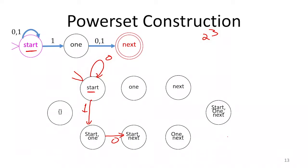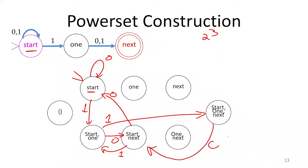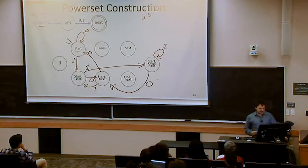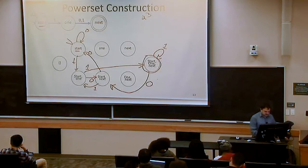From {start, 1} on a one, start goes to start and one, and one goes to next, so we're in {start, 1, next}. From {start, next} on a zero, start goes to start and next doesn't go anywhere, so we go to {start}. On a one, start goes to start and one, so we go to {start, 1}. From {start, 1, next} on zero, we end up in {start, next}; on a one, we end up in the same place. The final states are any super states containing 'next.'